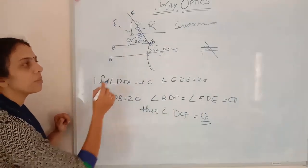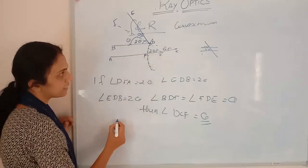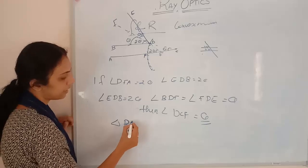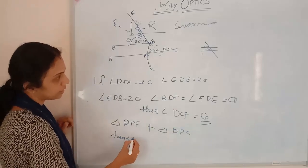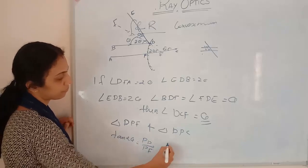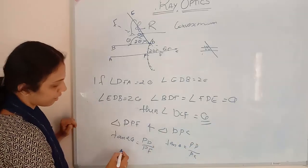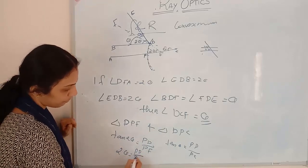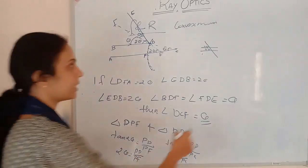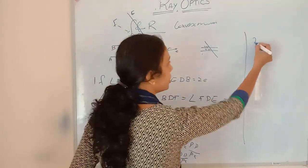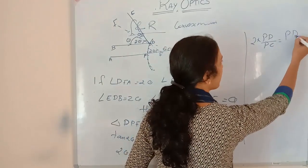Now, how will we find out the result? We consider two triangles: triangle DPF and triangle DPC. Tan 2θ equals PD divided by PC, and therefore 2θ equals PD divided by PC. Also, theta equals PD divided by PF. So substituting, 2 times (PD/PC) equals PD/PF. PD cancels, giving PC equals 2 times PF.